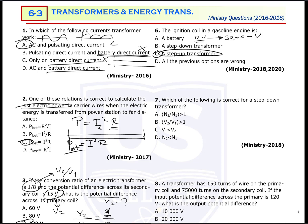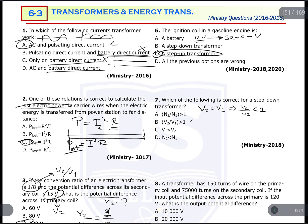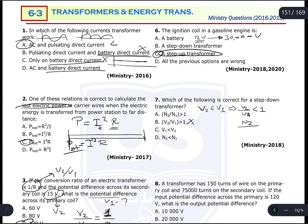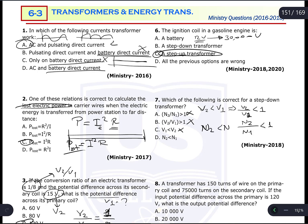Question 7: Which of the following is correct for a step-down transformer? In a step-down transformer, V2 is less than V1, so the conversion ratio V2/V1 is less than 1, meaning N2/N1 is also less than 1. Option C states V1 < V2, which is incorrect for step-down. Option D states N2 < N1, which is correct — because with fewer secondary turns, V2 can be less than V1.